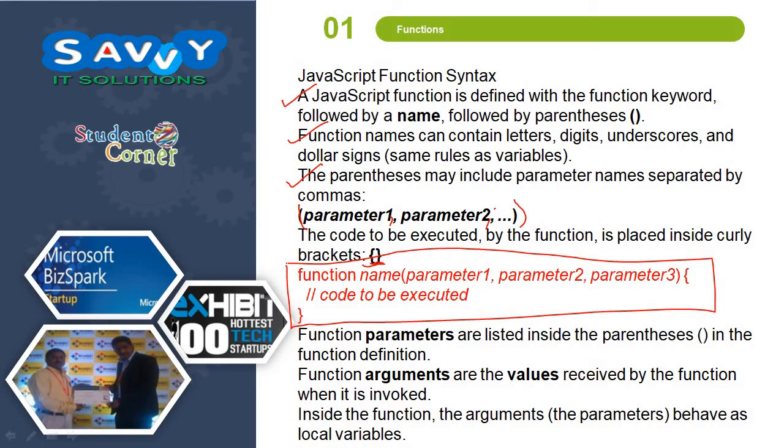Function parameters are listed inside the parentheses in the function definition. Function arguments are the values received by the function when it is invoked. Inside the function, the arguments, the parameters behave as local variables.